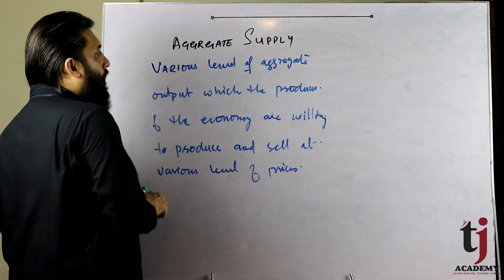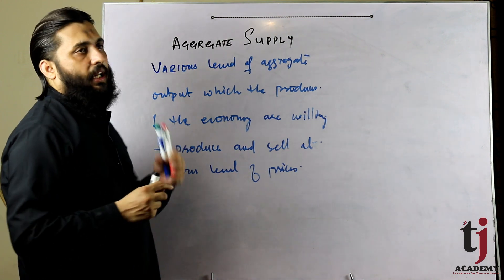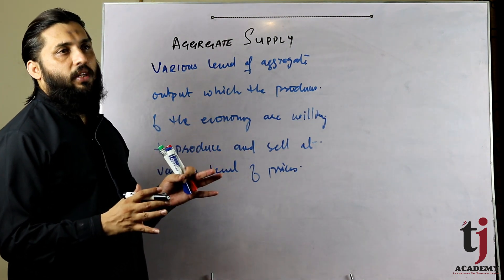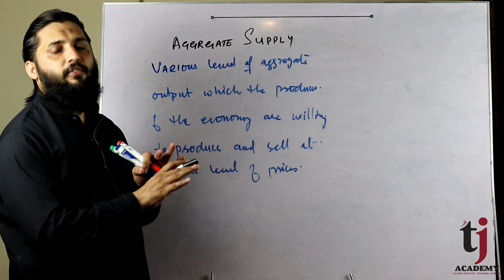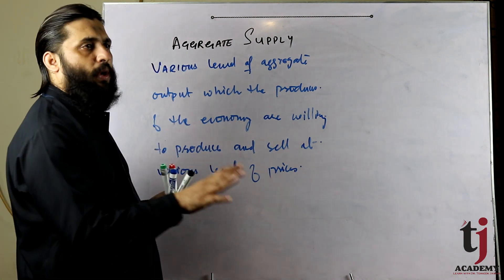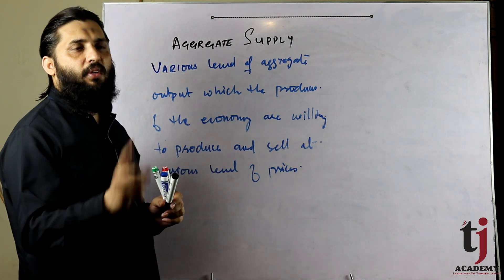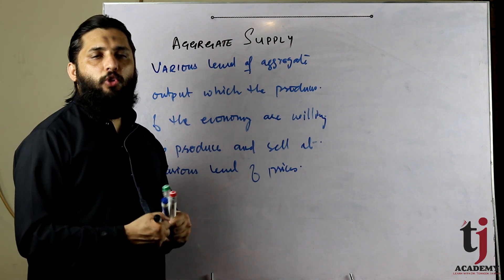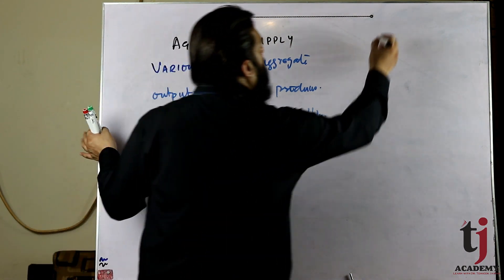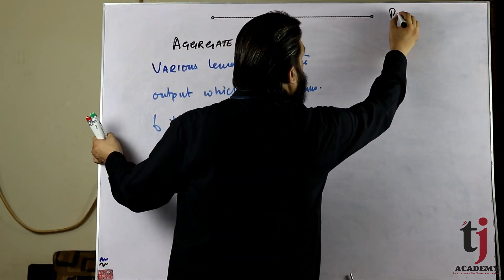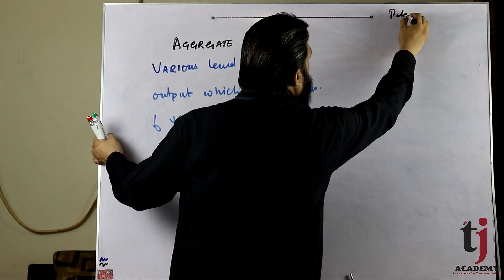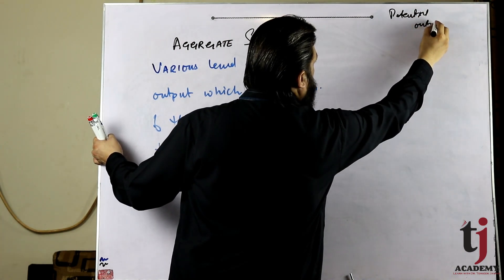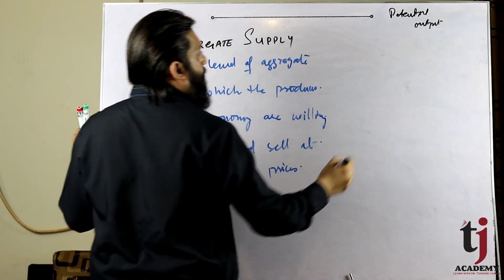अब इसको समझें। हमने classicals को discuss किया था और classicals assume करते थे कि there is full employment. Full employment का मतलब यही था — जो output full employment पर produce होगा, उस output को कहते हैं हम potential output. यह हम discuss कर चुके हैं prior lectures में।